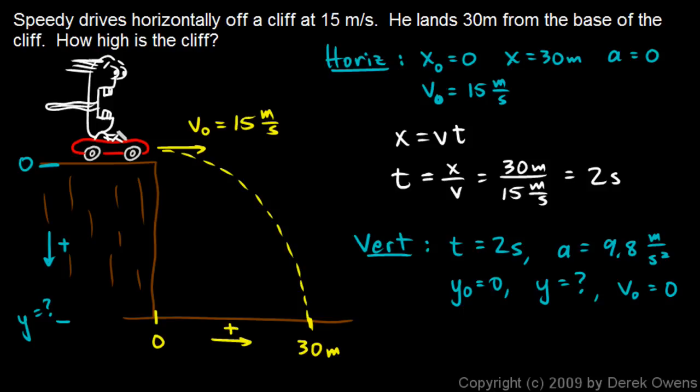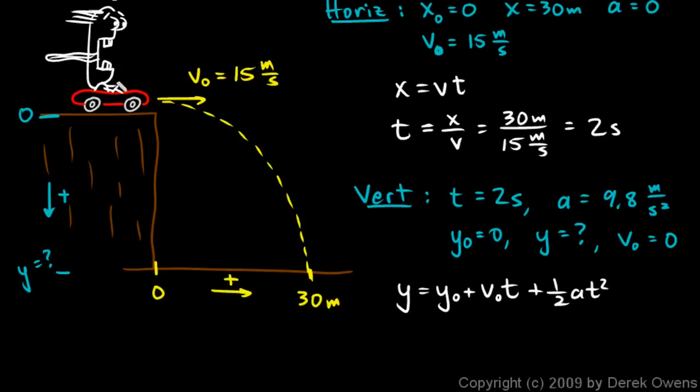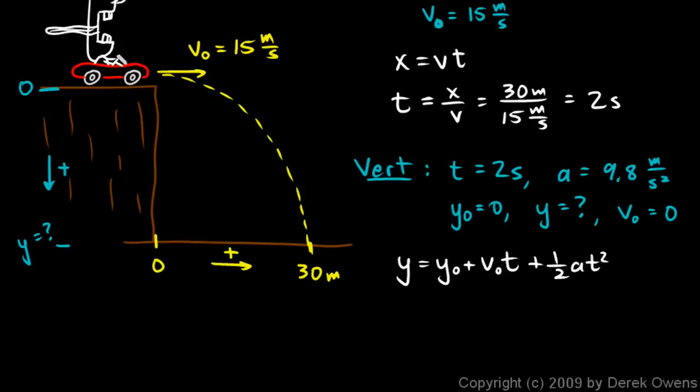Now, with that in mind, I can set up this equation. y is y0 plus v0t plus ½at². And I can use that to find the height. The only thing that cancels out here is y0, and the v0 cancels out also. v0 is 0, so let's cross that out. So this just becomes ½at².